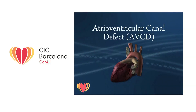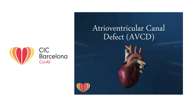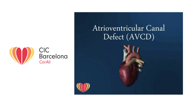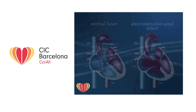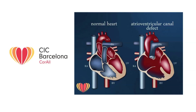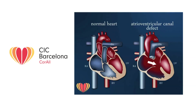The atrioventricular canal defect is one of the most frequent — the fourth most frequent cardiac malformation — and is the most significant one in patients with Down syndrome. There are two main forms of atrioventricular canal defect: the complete form and the partial form. The complete form is characterized by an atrioventricular valve with an associated ventricular septal defect, a cleft in the anterior leaflet of the mitral valve, and an atrial septal defect of the ostium primum type.